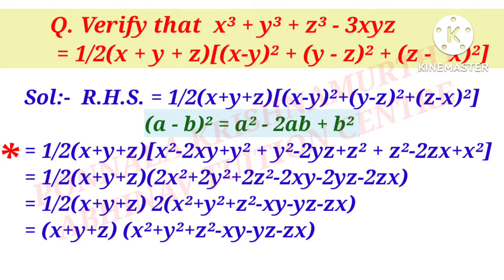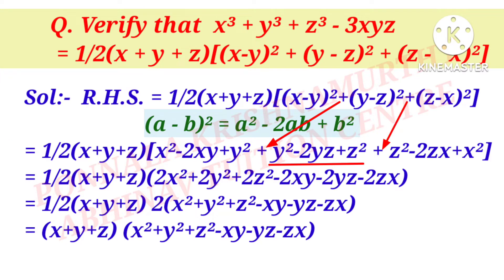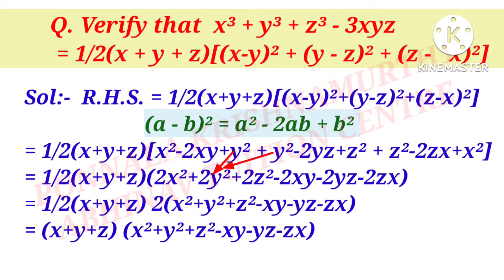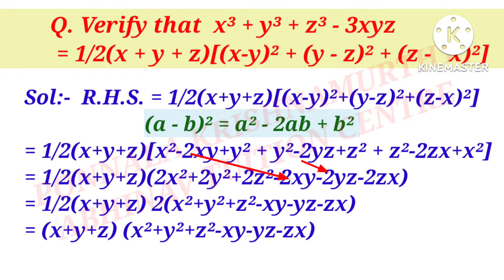So (x − y)² becomes x² − 2xy + y²; plus (y − z)² becomes y² − 2yz + z²; plus (z − x)² becomes z² − 2zx + x². That is equal to 1/2 into (x + y + z) into [x² + x² + y² + y² + z² + z² − 2xy − 2yz − 2zx], which becomes 1/2 into (x + y + z) into [2x² + 2y² + 2z² − 2xy − 2yz − 2zx].